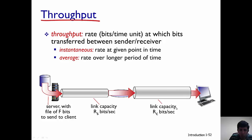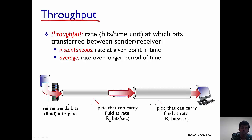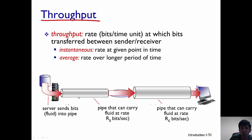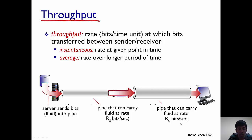The way to think of throughput is via a fluid model. Think about water flowing through a pipe — the server is like a reservoir with F bits to transmit. Those bits flow through the first pipe at a rate of R_s bits per second and through the second pipe at R_c bits per second. The question is: at what rate can bits flow from the server to the client when these two links have different capacities?